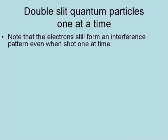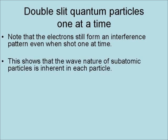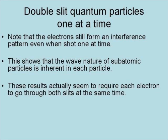Note that the electrons still form an interference pattern even when shot one at a time. This shows that the wave nature of subatomic particles is inherent in each particle. These results actually seem to require each electron to go through both slits at the same time.